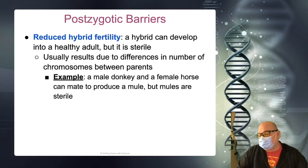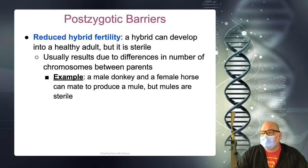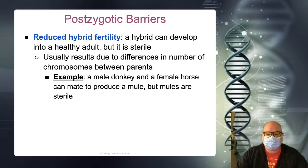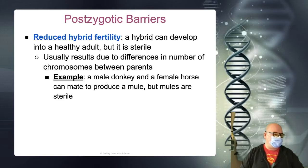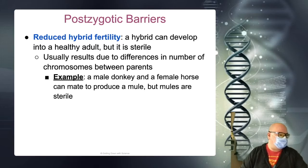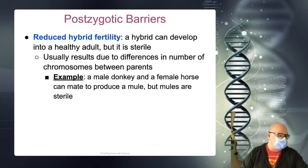This one is common because we mention it a lot because we see the results of it — you would never even see the results of hybrid viability failure. There are animals that we can cross, but their offspring are always genetically sterile. A lot of times they're always the same sex too. Mules are an example of that.